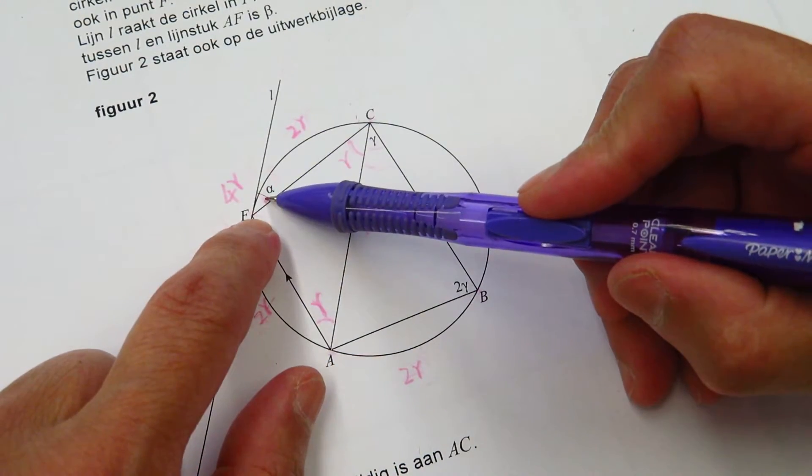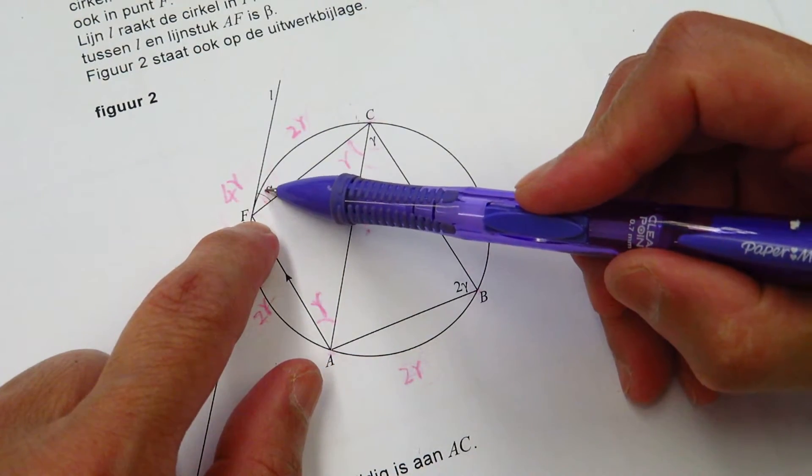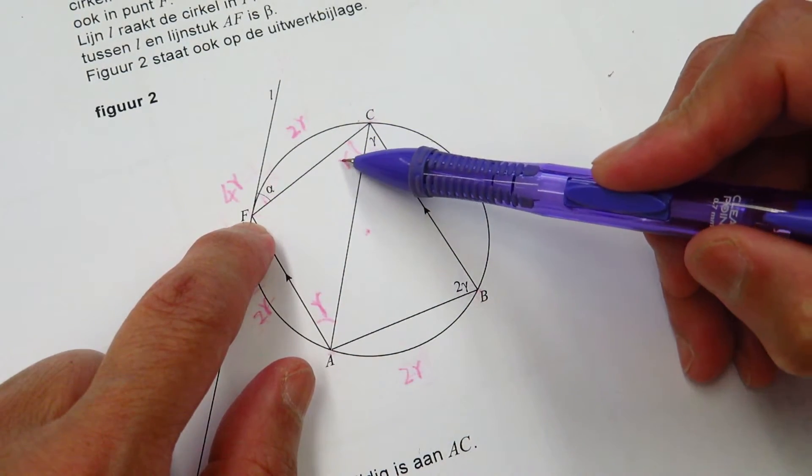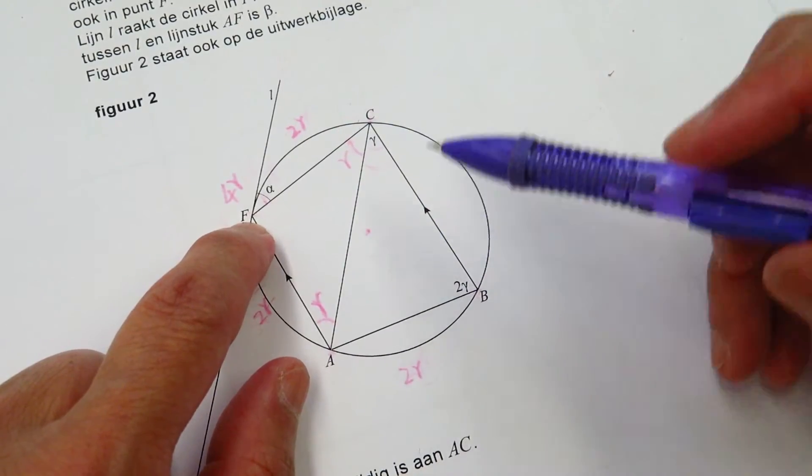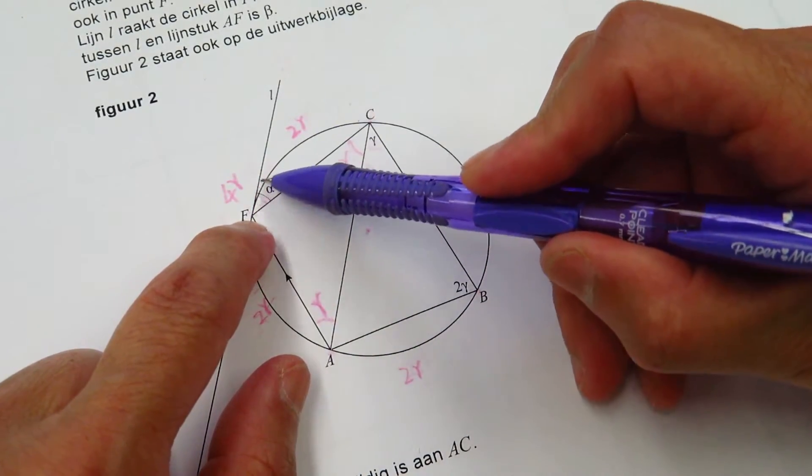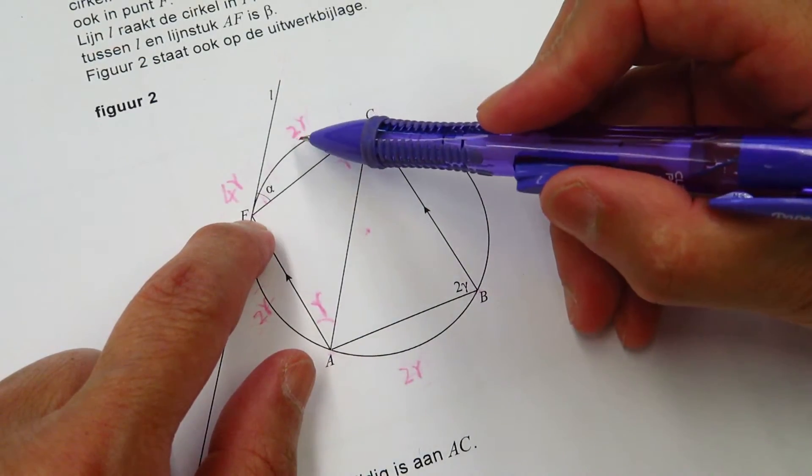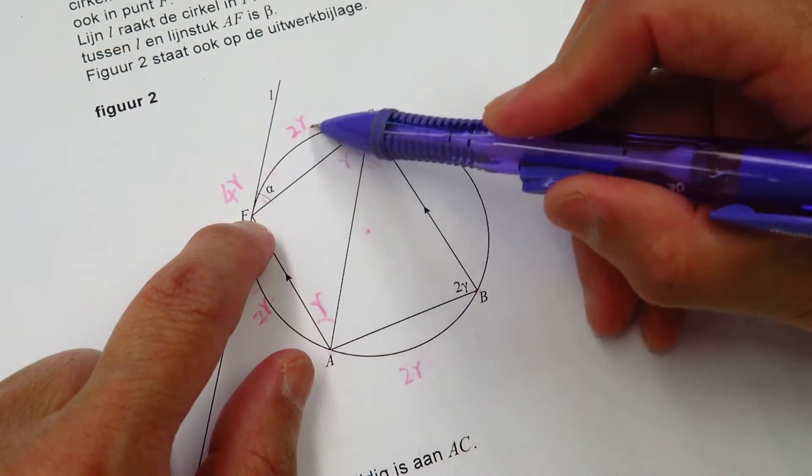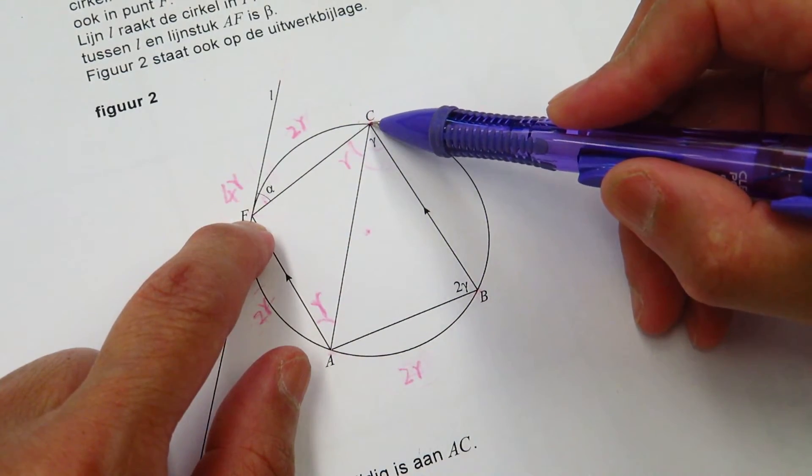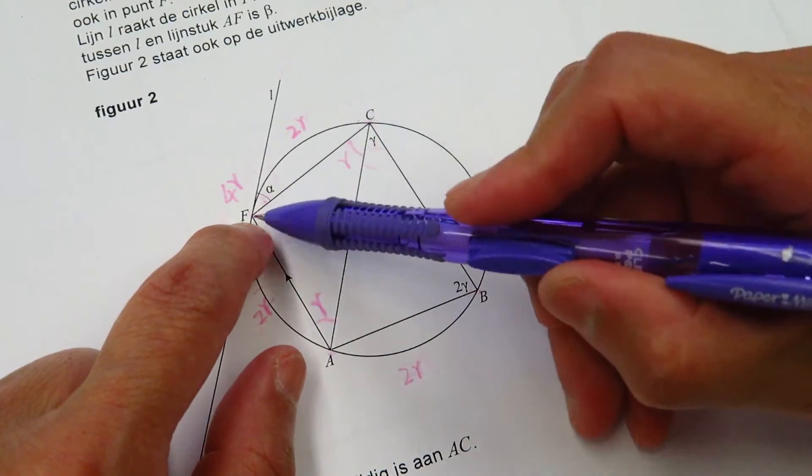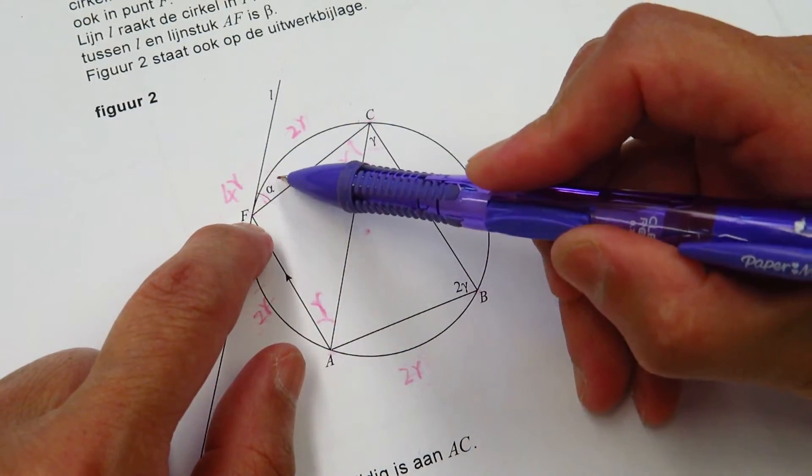Here is gamma. And we need to know that this angle, line L, FC, is also gamma. Then we can prove. Here, FC, is 2 gamma. The arc of FC is 2 gamma. Then we know that LFC, this angle is 1 gamma.